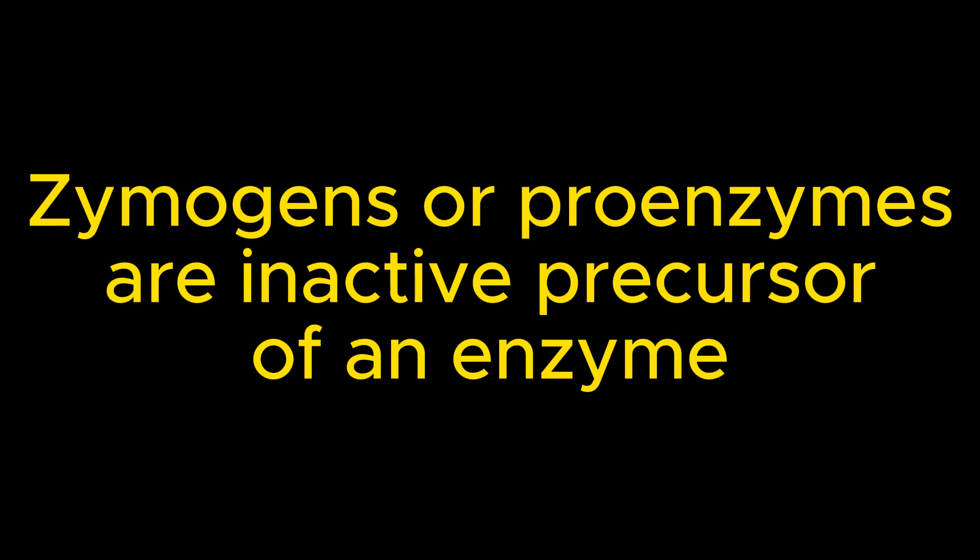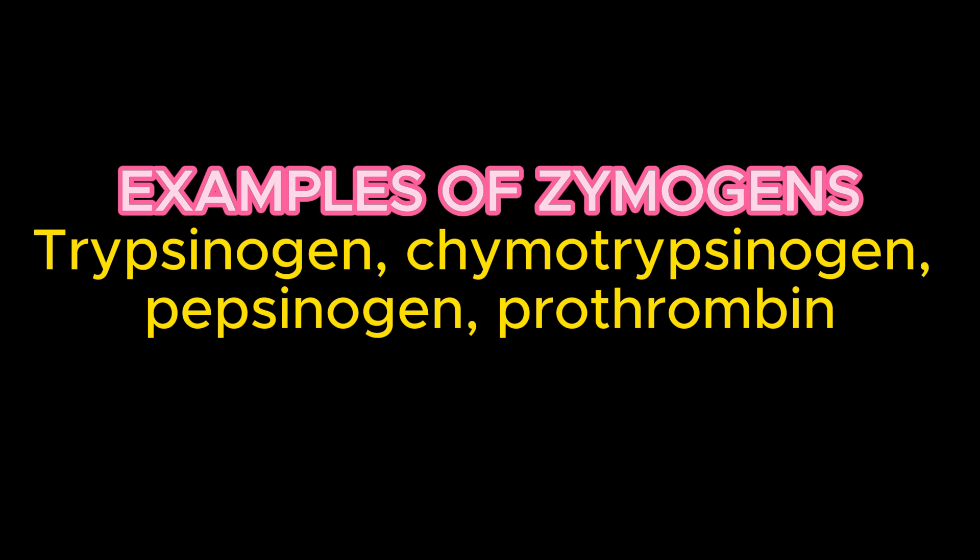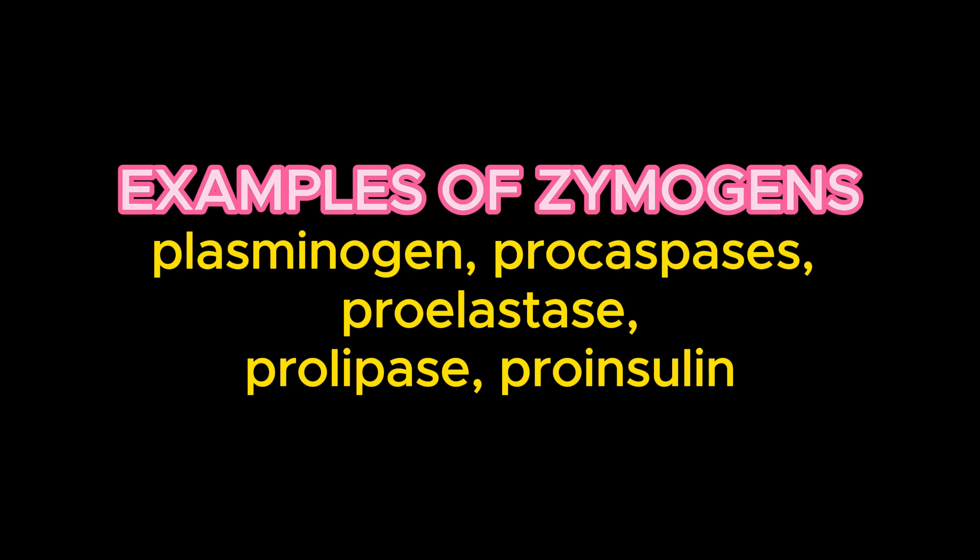Before we look at the mechanisms of activation of zymogens, let's look at some examples. Trypsinogen, when activated, will be converted to trypsin. Chymotrypsinogen, when activated, will become chymotrypsin. Pepsinogen, when activated, will become pepsin. Prothrombin will be activated to thrombin. Other examples are plasminogen, which when activated becomes plasmin; pro-caspase, which when activated becomes caspase; and pro-elastase, which when activated becomes elastase.